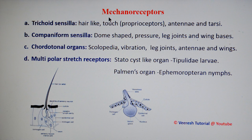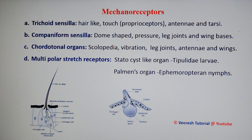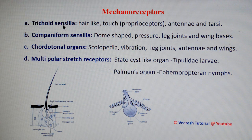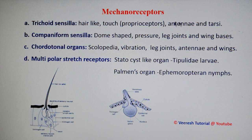The first type is mechanoreceptors — sense organs involved in detection of mechanical distortions like pressure and vibration. There are four types of mechanoreceptors. The first one is trichoid sensilla: hair-like structures sensitive to touch, i.e. proprioceptors, mainly located on the antenna and tarsi.